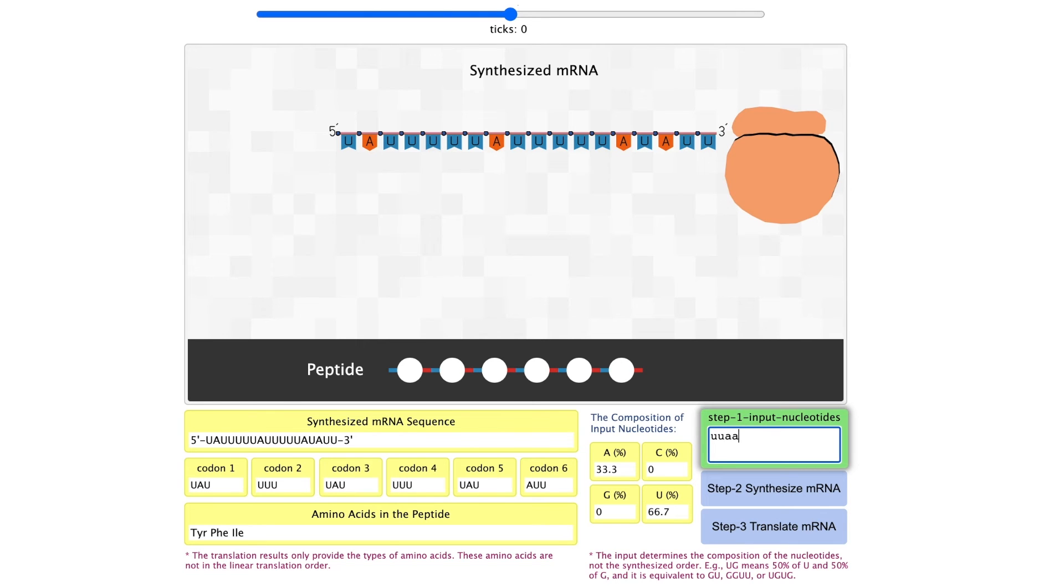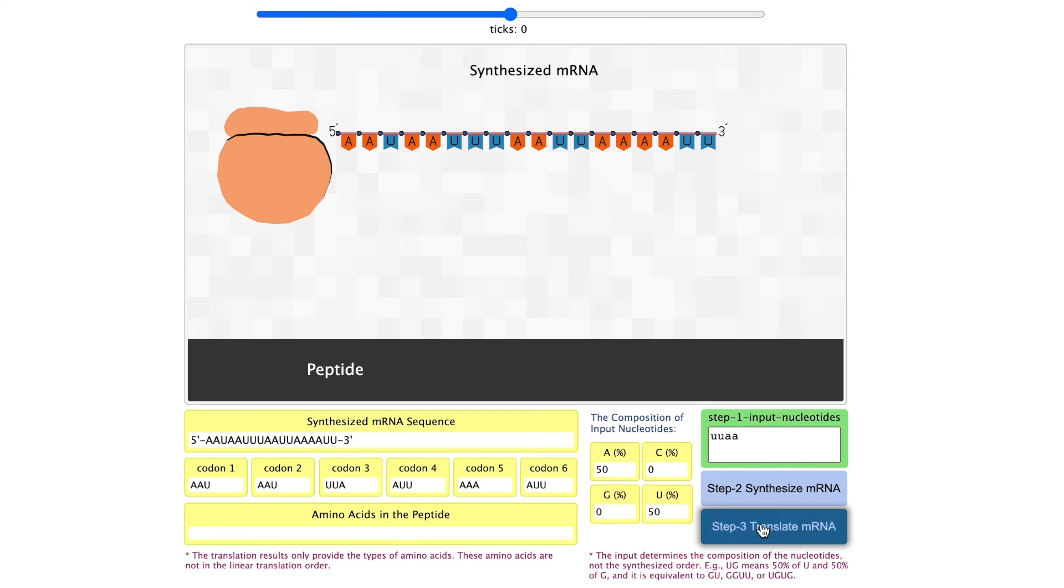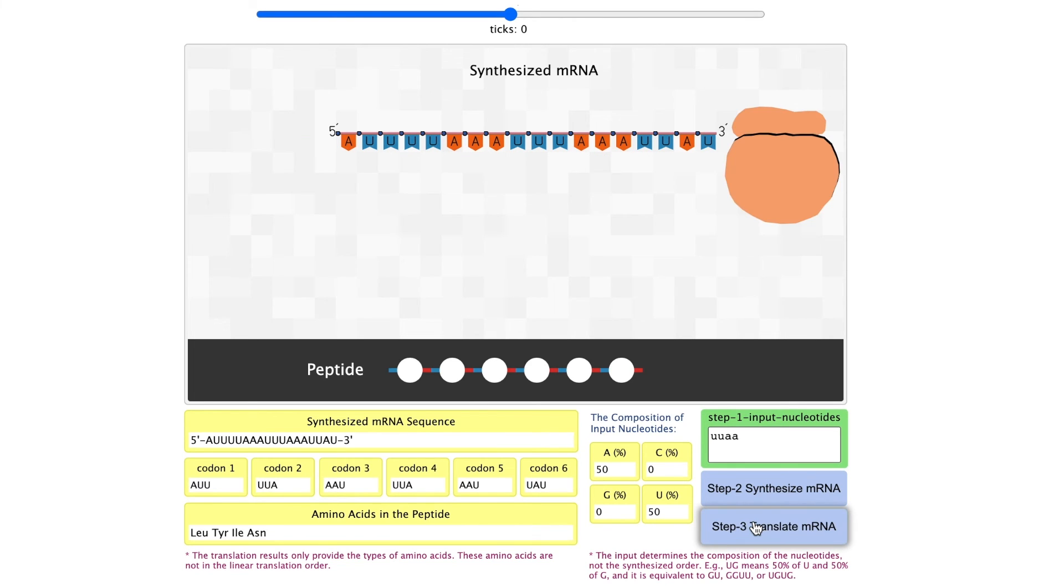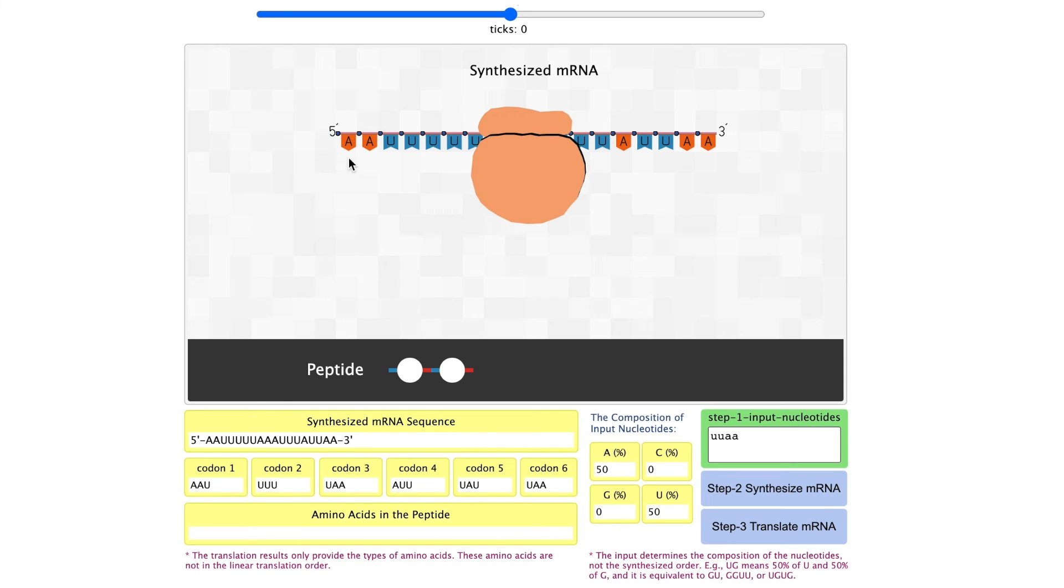When students investigate U and A, they may synthesize an mRNA that contains a stop codon. Like here, the ribosome stops in the middle of the mRNA. Only two amino acids are incorporated. If we look at the codons, the third codon is a stop codon.